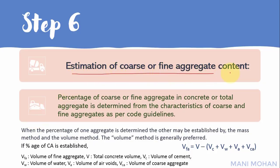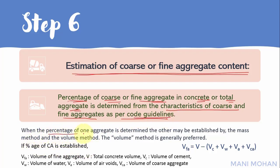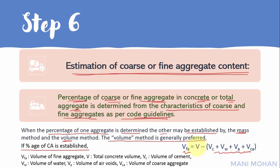Step 6: Estimation of coarse and fine aggregate content — the percentage of coarse or fine aggregate in the total aggregate is determined from the characteristics of coarse and fine aggregates as recommended by the relevant code. When the percentage of one aggregate is determined, the other is established by the mass method or the volume method, with the volume method generally preferred as it is a more exact procedure. The volume of fine aggregate is determined by subtracting the volumes of cement, water, air, and coarse aggregate from the total concrete volume.